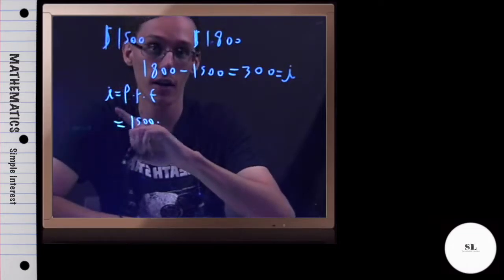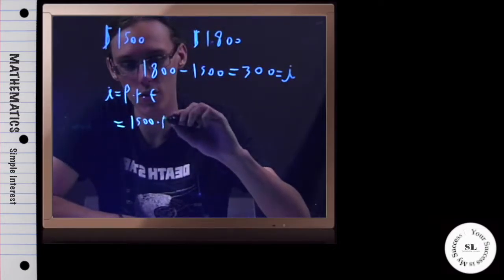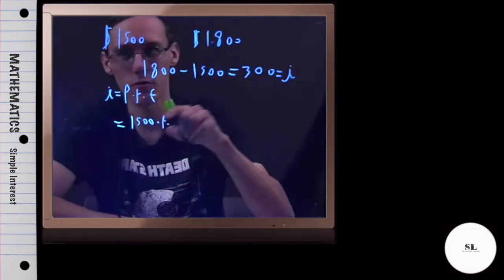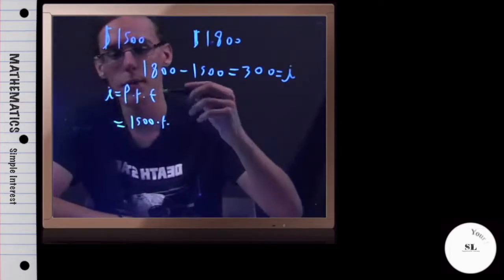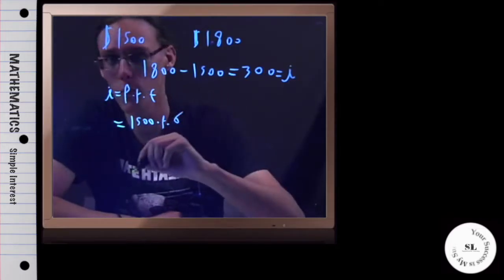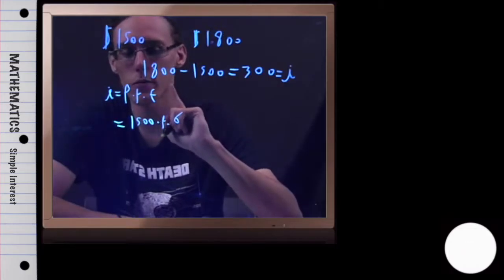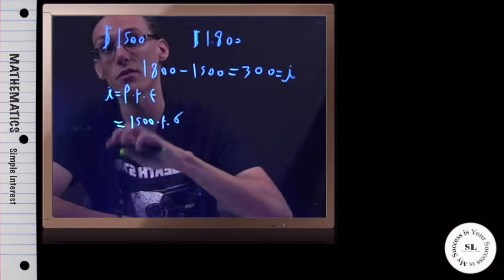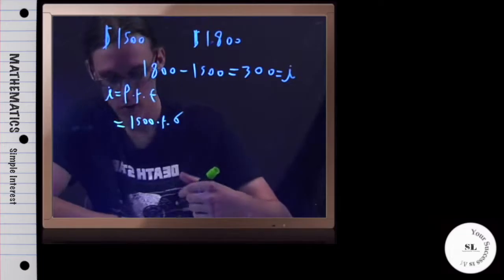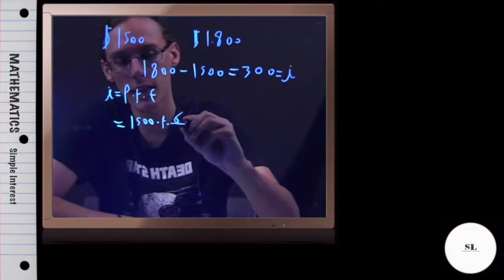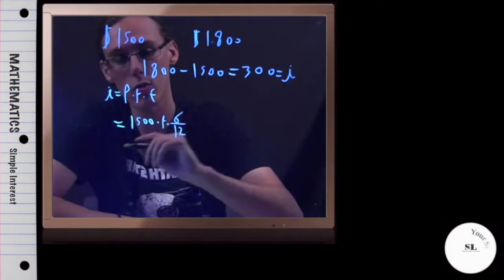First of all, we need to know how much interest we're paying in general. I can see that I borrowed $1,500 and I'm paying back $1,800. So the amount I'm paying back is the final value of $1,800 minus the initial value of $1,500. So that's going to come out to be $300. In other words, the amount of interest, I, is $300.